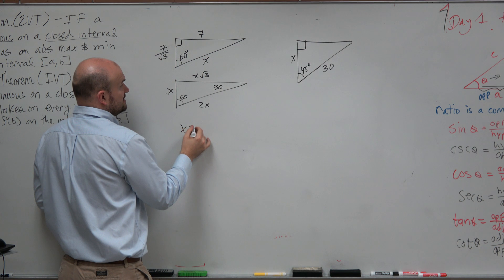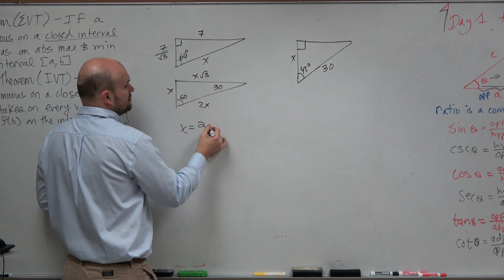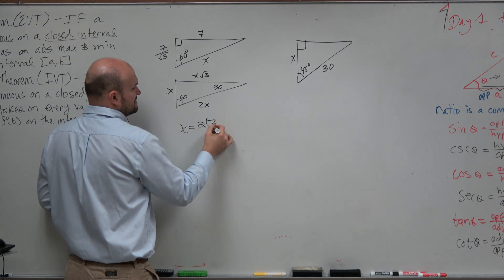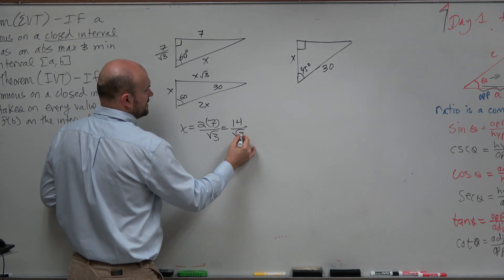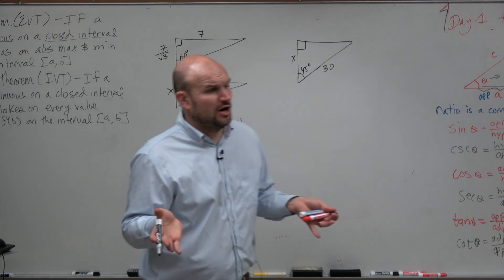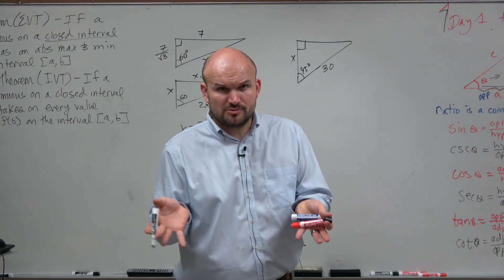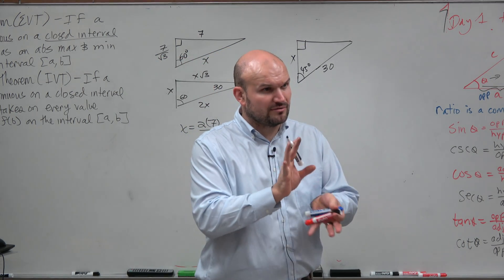So you could say x is equal to 2 times 7 divided by the square root of 3, which is equal to 14 over the square root of 3. But that is assuming that you are really good at knowing your special right triangles, right? And you're really good at doing that.